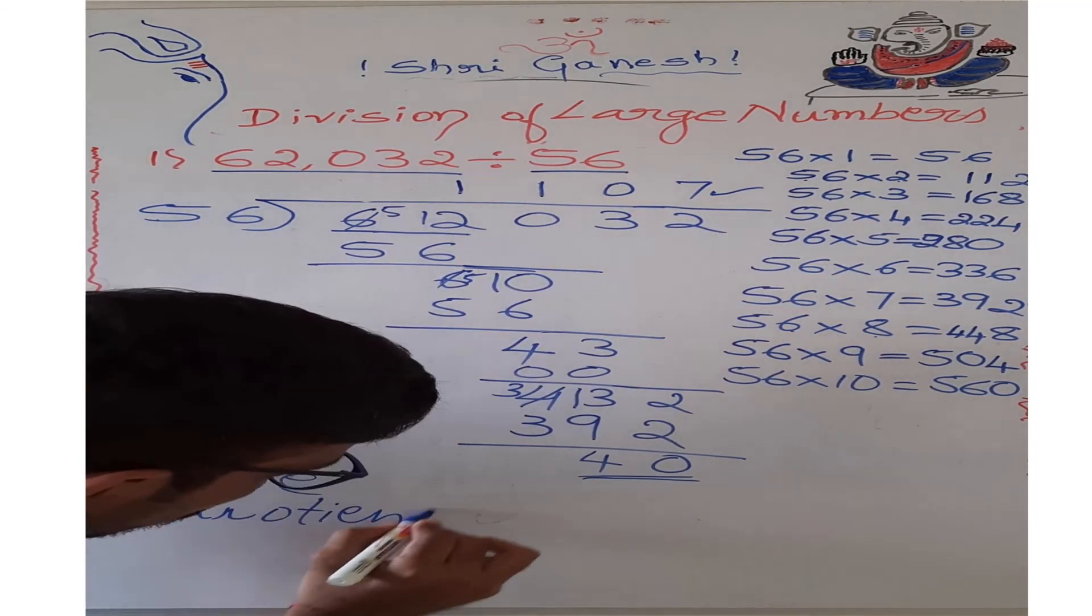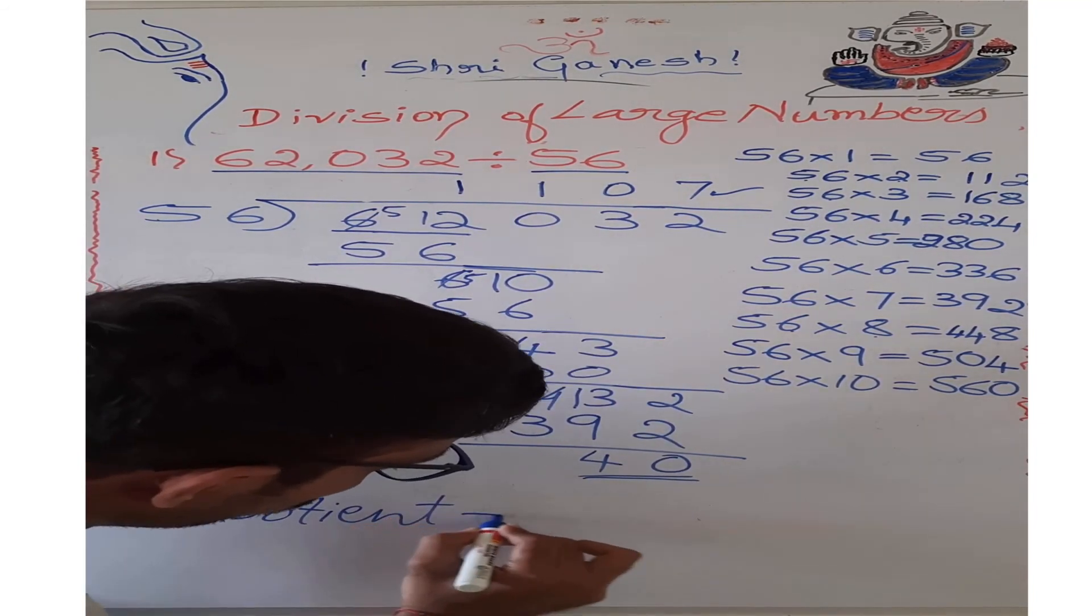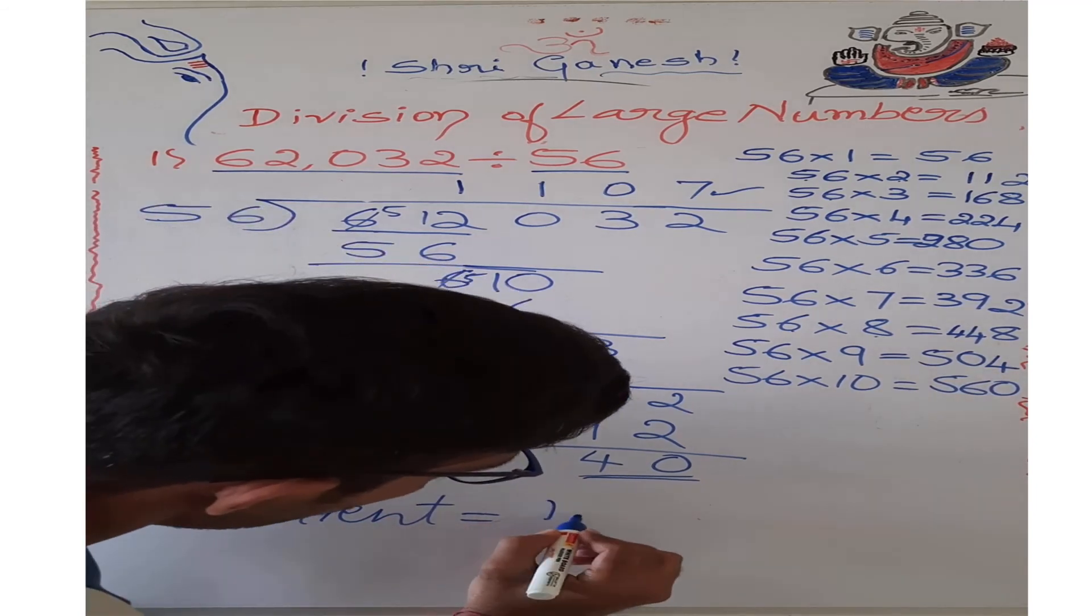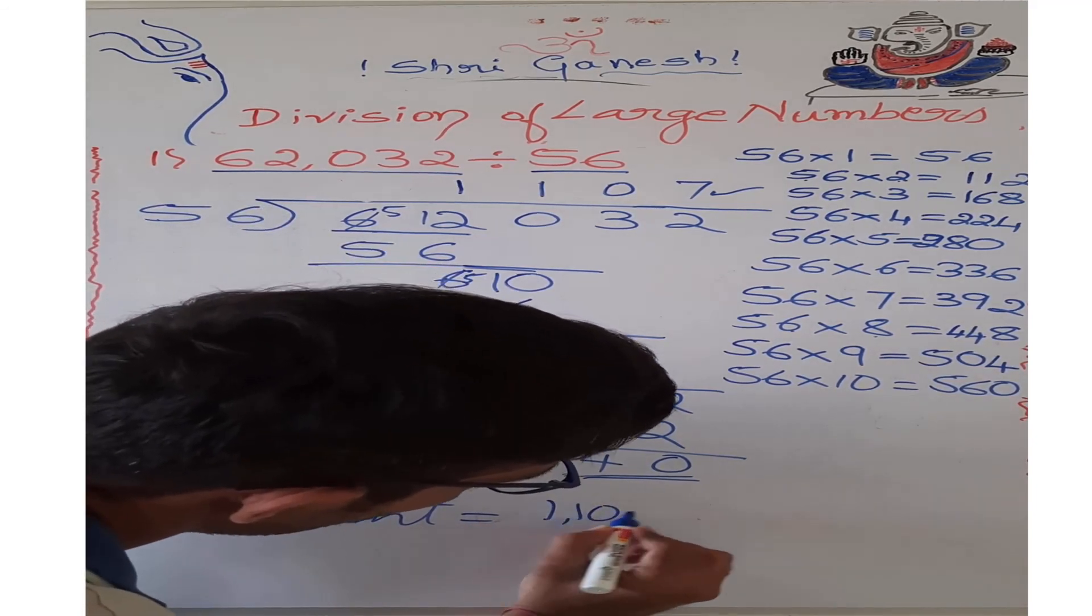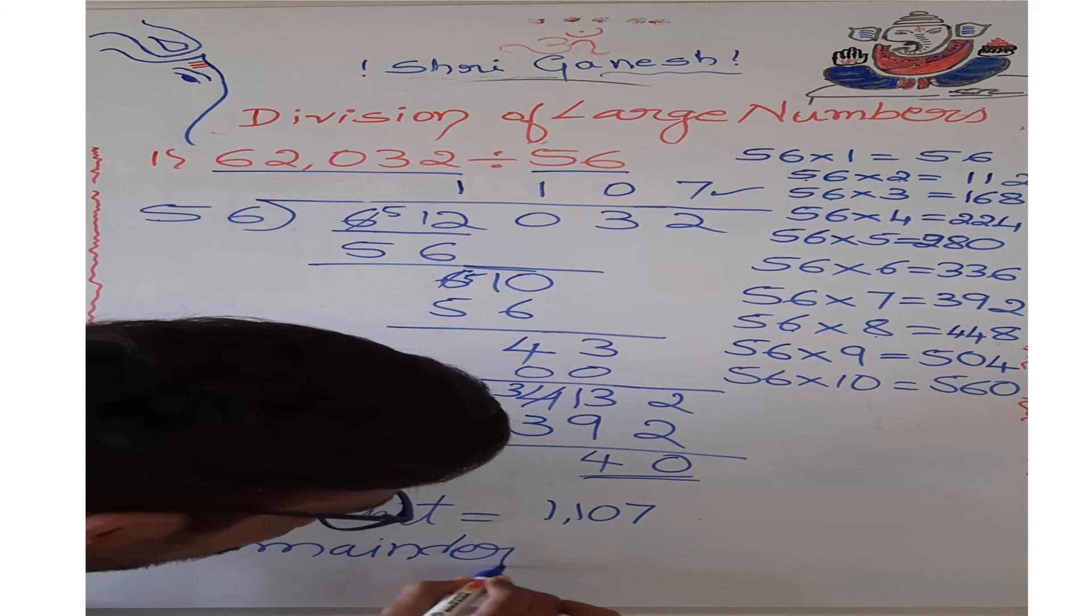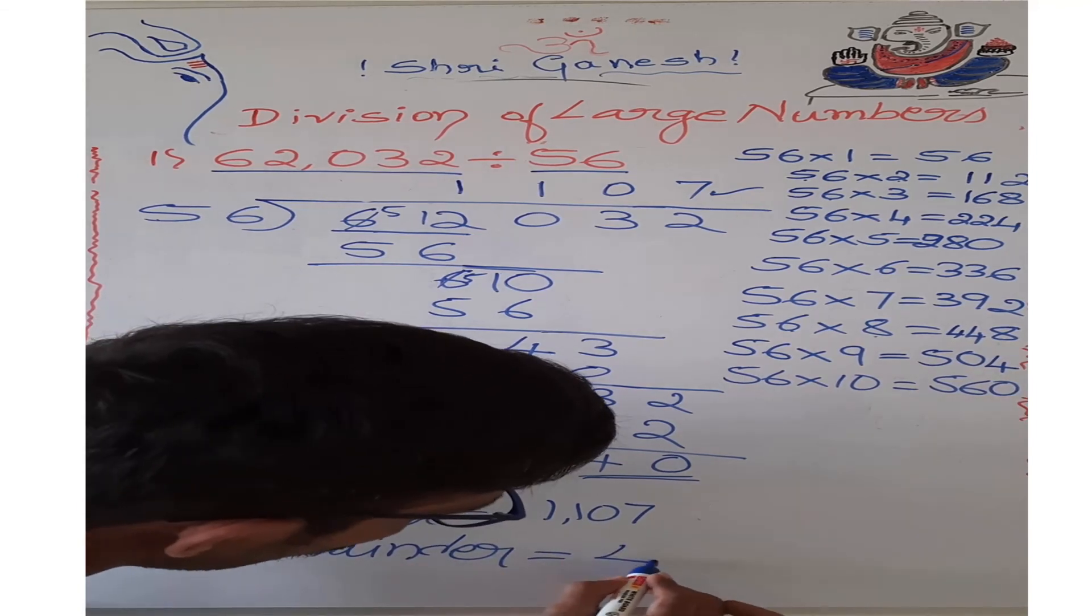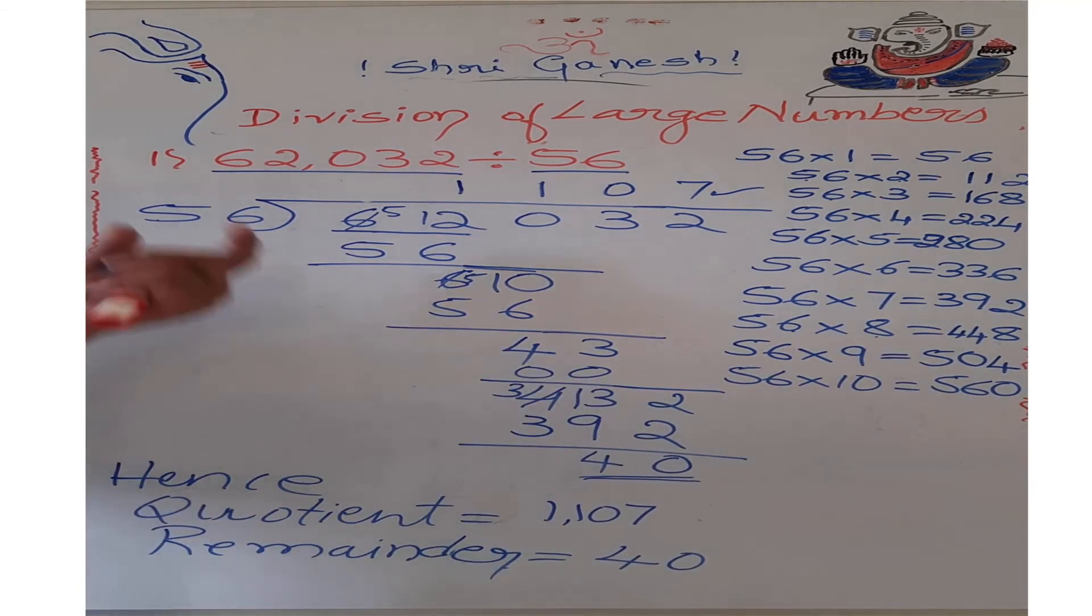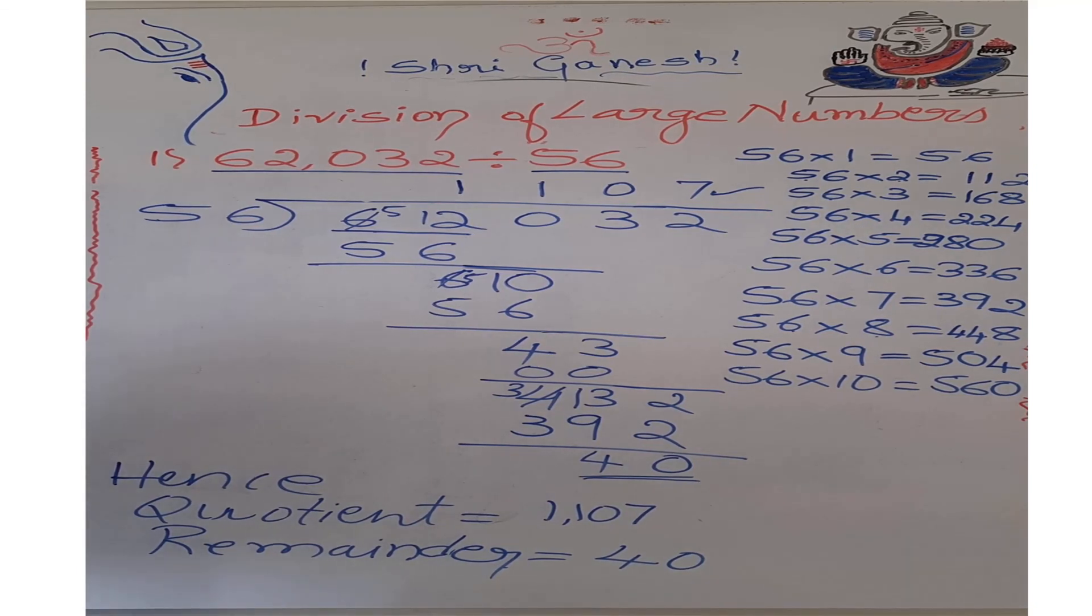Hence, quotient equals to, we got it as 1107. Remainder I got it as 40. This way we will find the quotient and remainder of any given numbers.